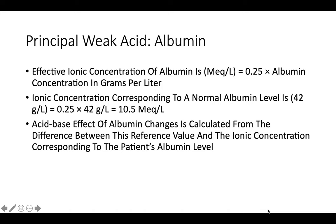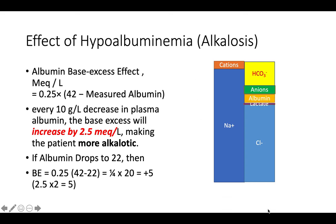Albumin is the other weak acid. Its effect on the strong ion difference is described as one-quarter of the albumin concentration in grams per liter. Normal albumin is around 42 g/L, giving an ionic concentration difference of one-quarter of 42, approximately 10.5 mEq/L. The acid-base effect of albumin changes is calculated from the difference between the reference value and the ionic concentration corresponding to the patient's albumin level.